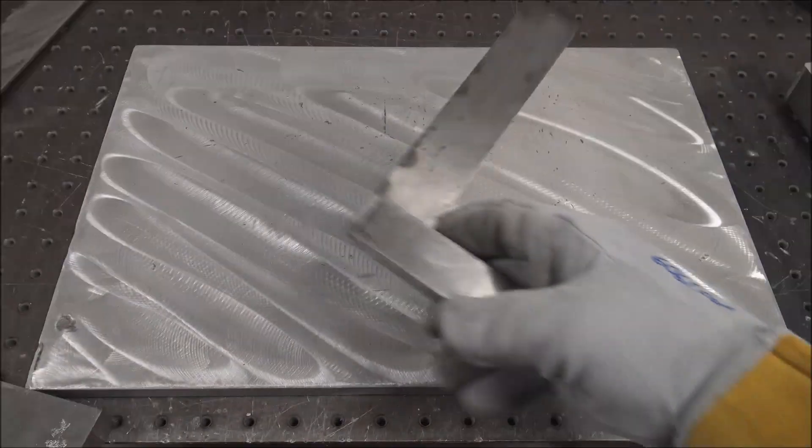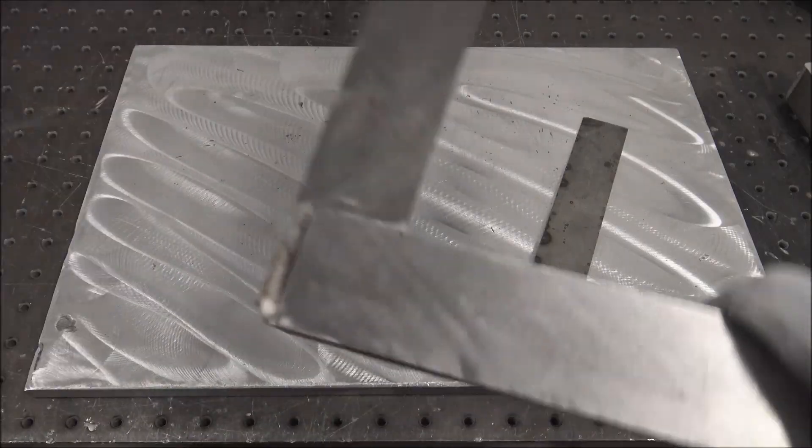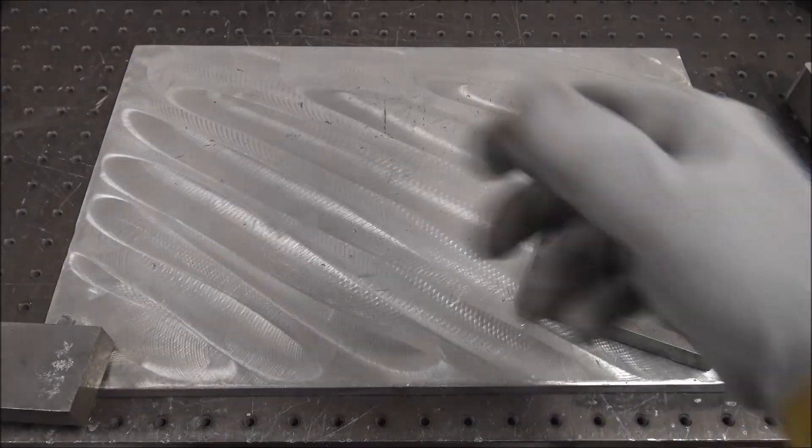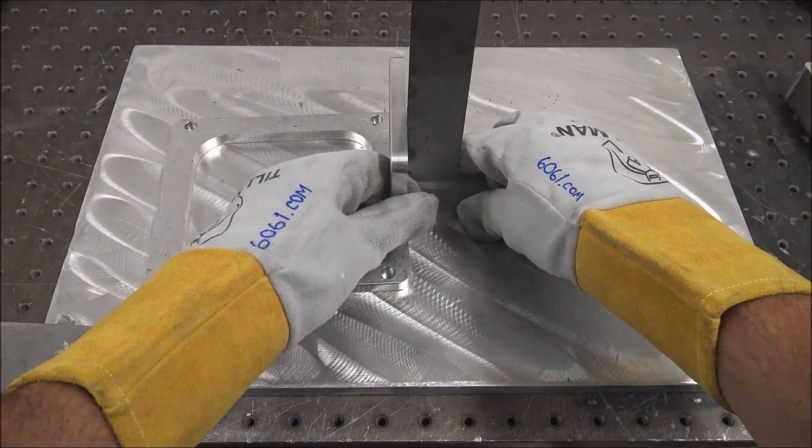Machinist squares, big and small. They're good for parts on flat surfaces, like say you were wanting to tack weld that on, make sure it was at a 90-degree angle.